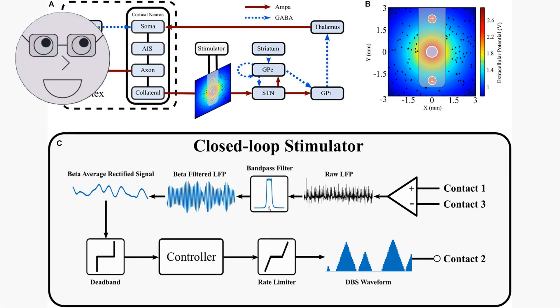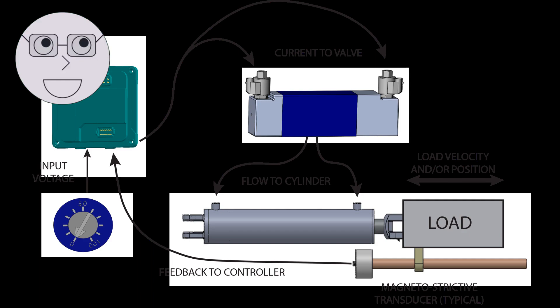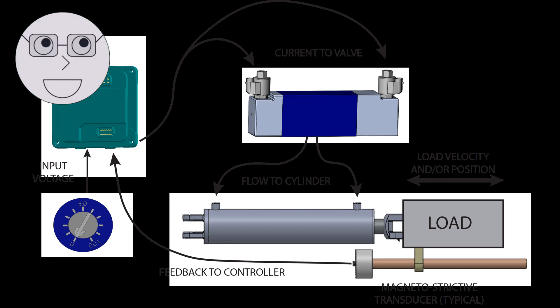In this segment, we will explore the key concepts of control theory, including feedback loops, stability, and performance criteria. Feedback loops are at the heart of control theory. A feedback loop is a system that takes the output of a process and uses it to control the input of the process, allowing the system to adjust its behavior based on the output it produces.